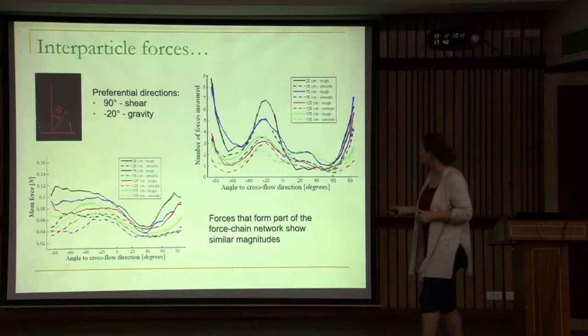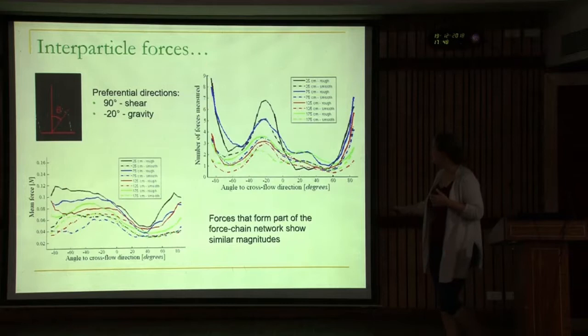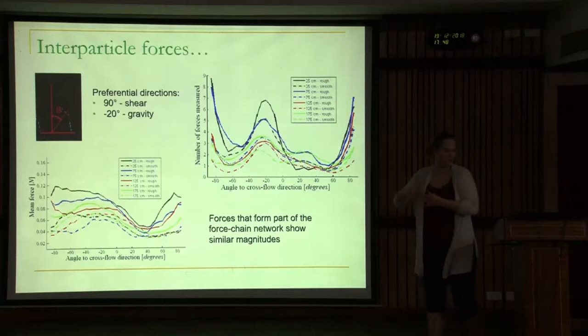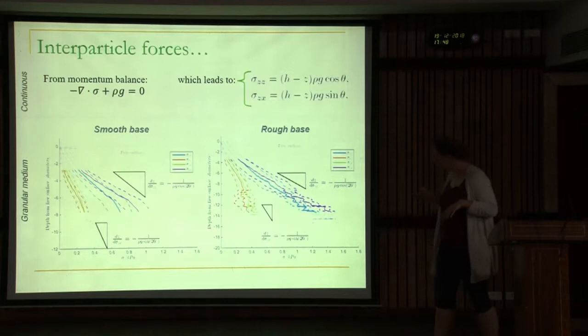Going back to quantitative measurements: we see a peak at minus 20 degrees in our preferred direction, due to gravity since our inclined chute is at 20 degrees. We also see a peak at 90 or minus 90 degrees, due to shear, parallel to the base. The nice thing is that we can get a quantitative measure of all four shear and normal stress components.